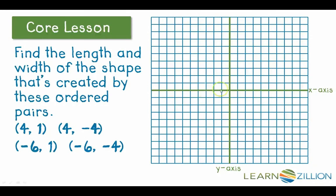As we would plot these out, we would do (4, 1)—so over 1, 2, 3, 4, and then up 1. We would have (4, -4)—over 1, 2, 3, 4, and then down 4: 1, 2, 3, 4. We'd have negative 6, so we'd go over to the left 6: 1, 2, 3, 4, 5, 6, and up 1. And then finally we'd have (-6, -4), so we would go over 1, 2, 3, 4, 5, 6, and then down 1, 2, 3, 4.